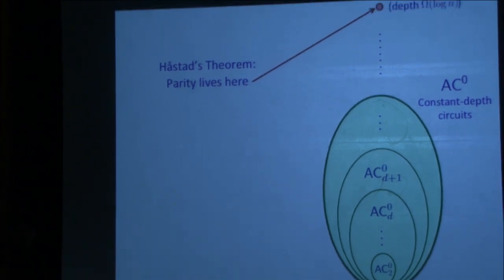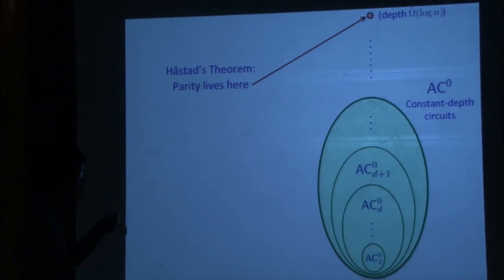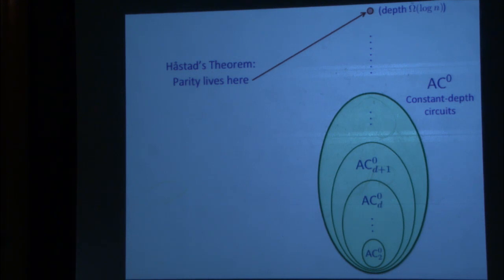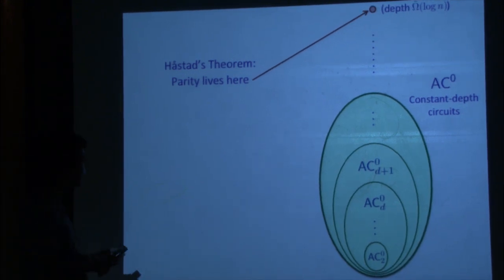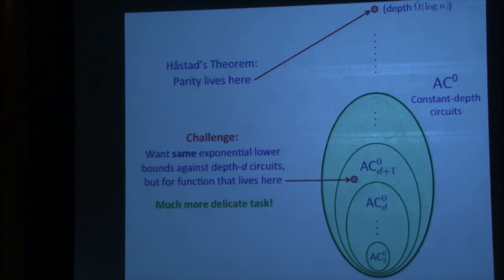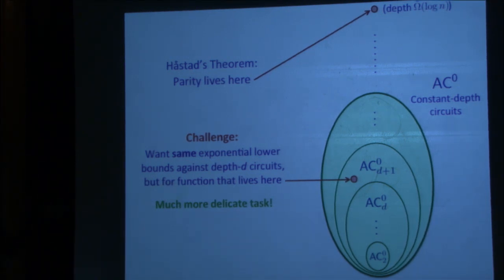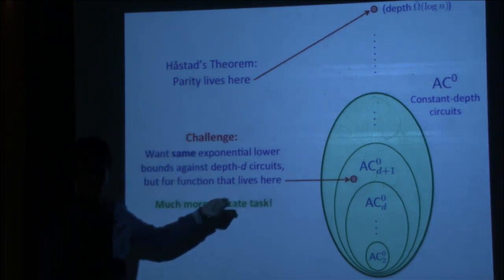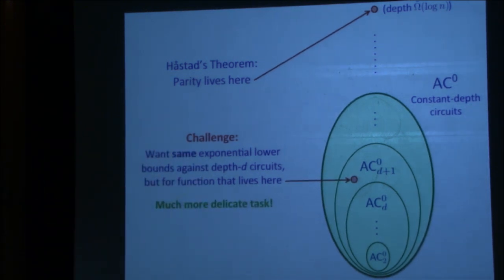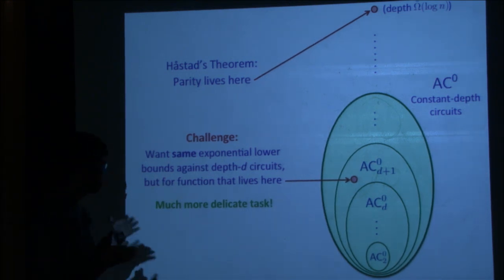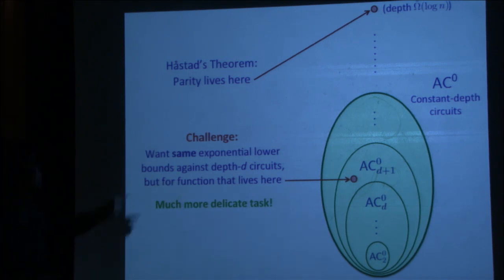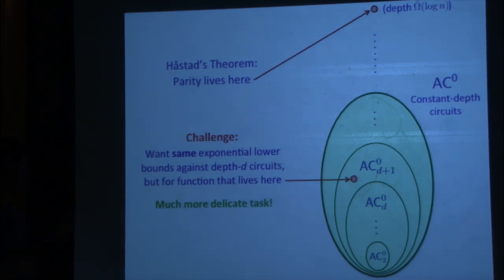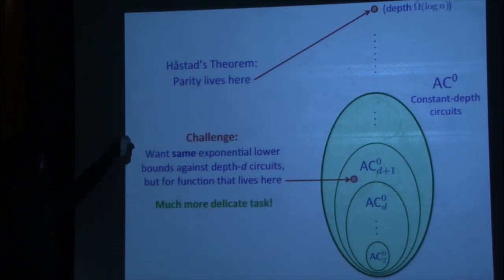Hastad's theorem also says that if you force me to use depth d, not only am I unable to compute parity in polynomial size, I need exponential size. Here's a challenge: I want the same exponential lower bound against depth-d circuits, ideally 2 to the n to the 1 over d, but not against parity — against a hard function that lives in depth-(d+1) AC0. So it's simple enough that with depth d+1 I can compute it in poly size, but with depth d I get the same lower bound as for parity.